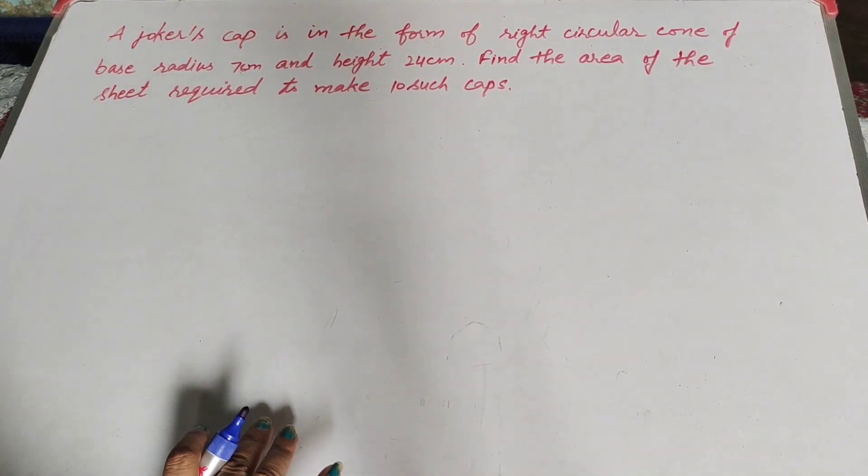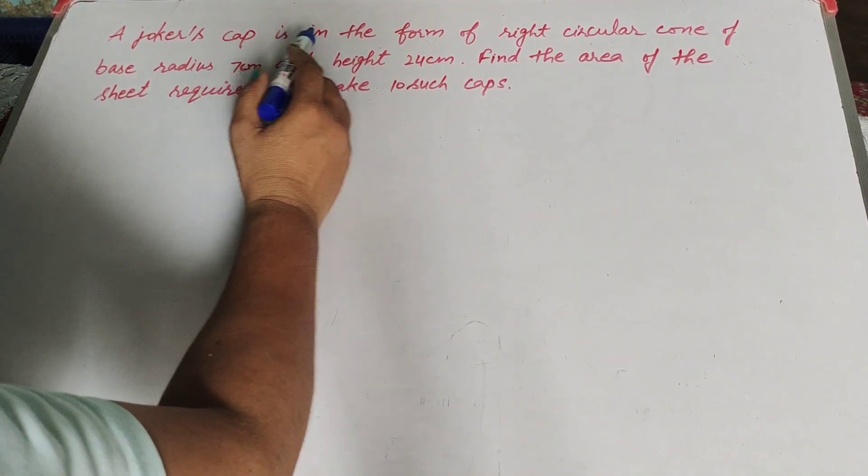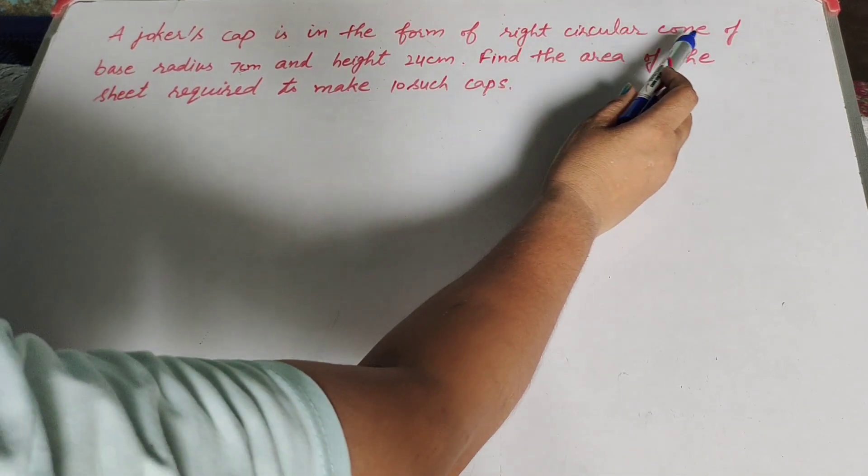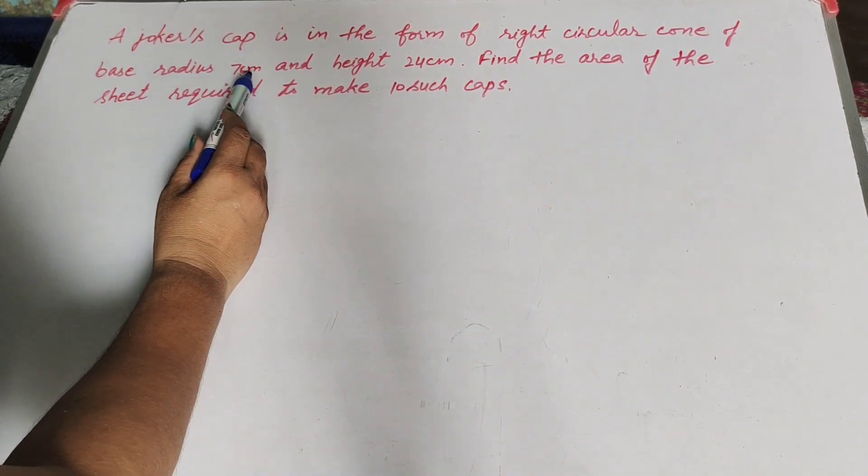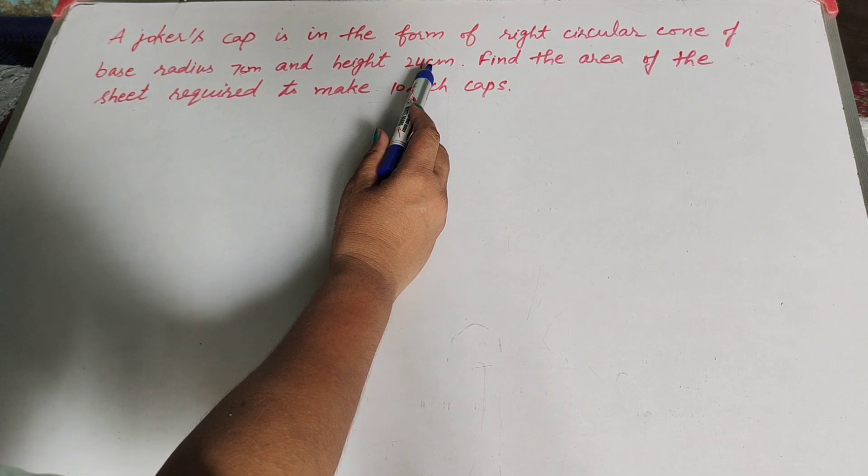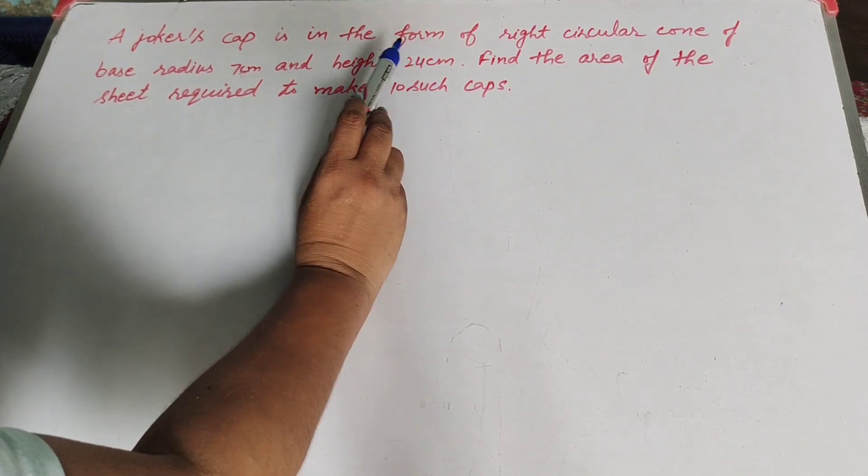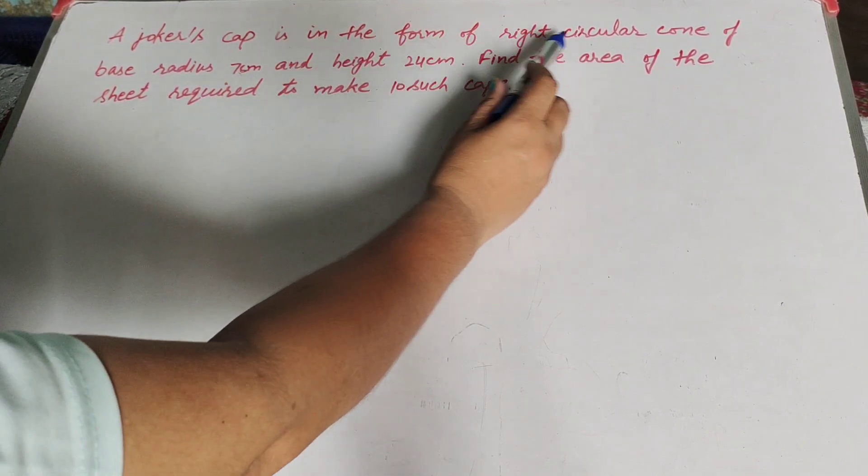Hello friends, welcome to my channel. In this video we discuss a joker cap is in the form of a right circular cone of base radius 7 cm and height 24 cm.